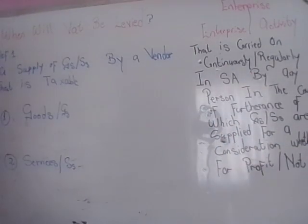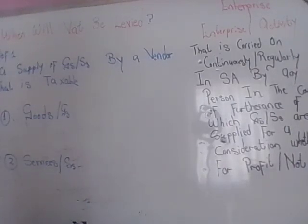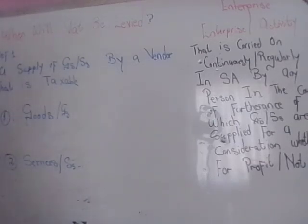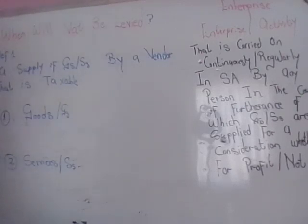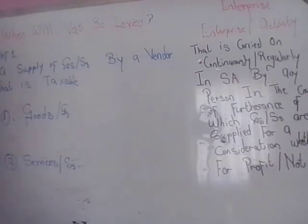If your turnover exceeds 50,000 rands but not one million rands, it's not a compulsory threshold — you can register if you so wish. It's a voluntary registration that you can exercise. So that's what a vendor is, basically.